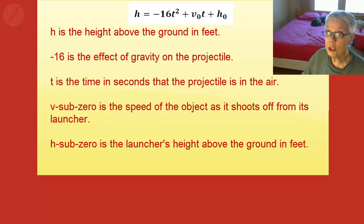The basic equation is h equals negative 16t square plus v sub zero t plus h sub zero. h is the height above the ground, negative 16 is the effect of gravity on the projectile, t is the time in seconds that the projectile is actually in the air.